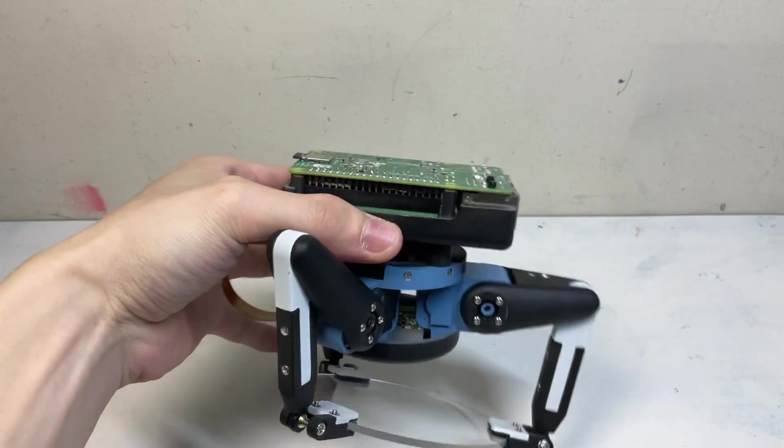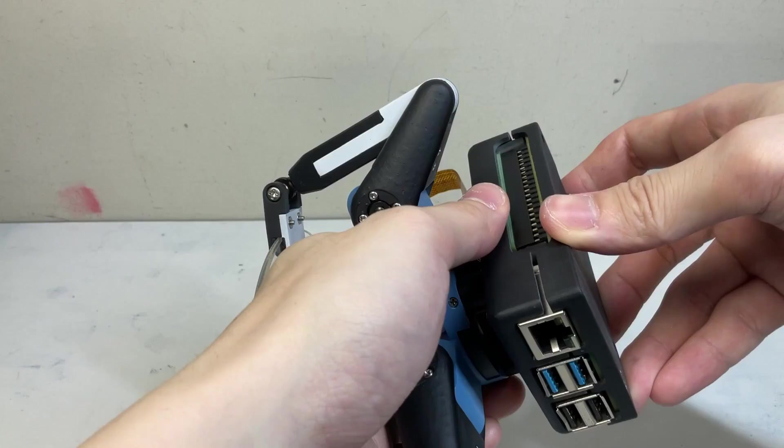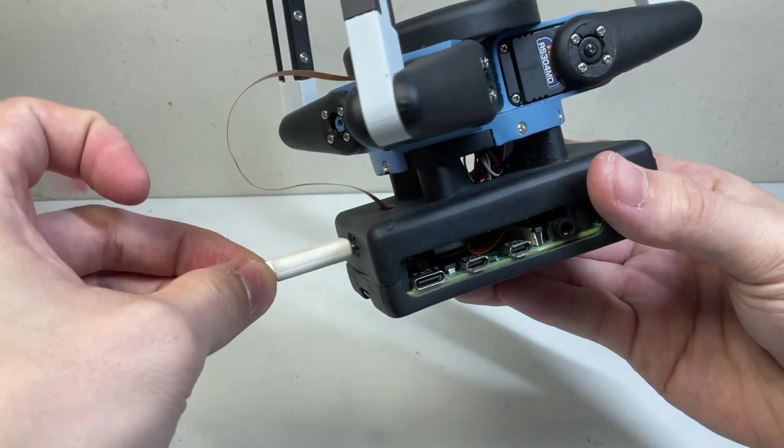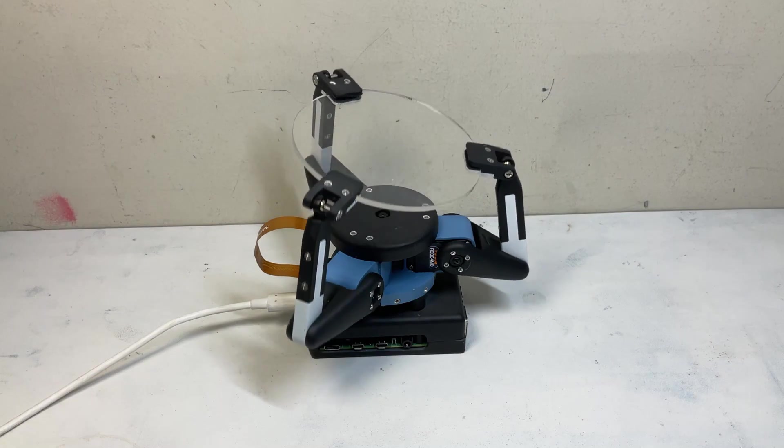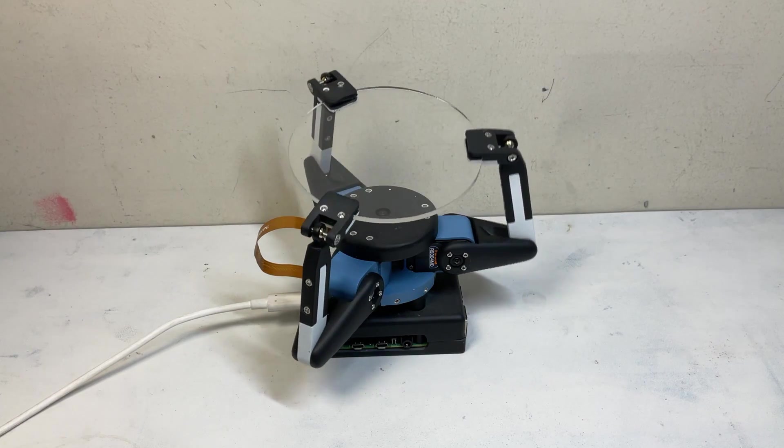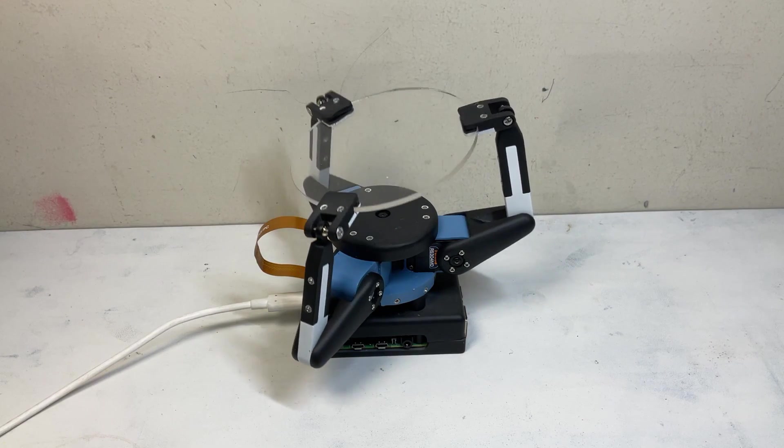Finally, connect the motor and camera wires to Raspi and the robot is complete. Create a program based on inverse kinematics and check the operation. The tilt of the robot is well controlled. This completes the construction of the robot's body.